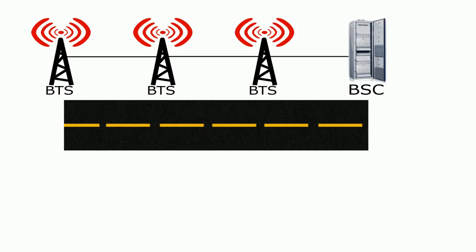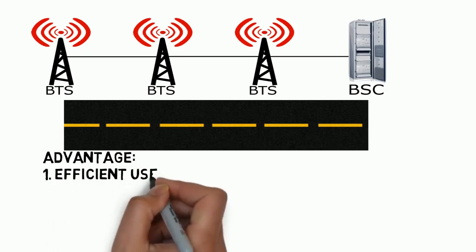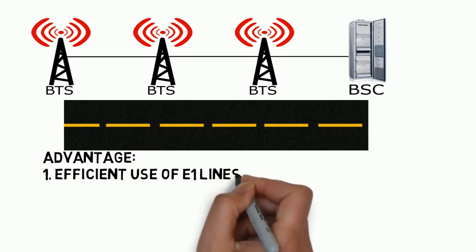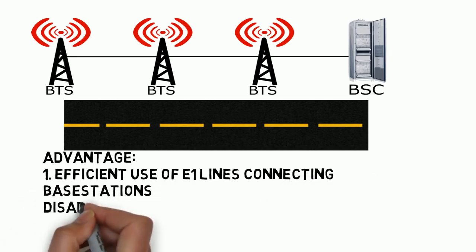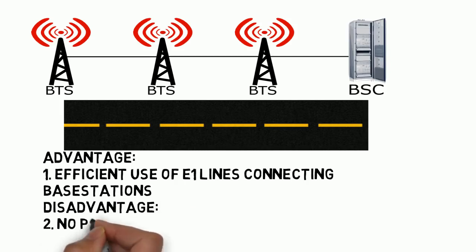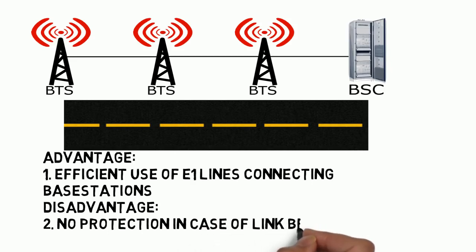On the highway, the BTSs can be connected in serial to one another and then to the BSC. These connections between the BSC and the BTS are made on E1 lines, or in the case of American standards, on T1 lines. Similarly, the connection between BTS and BTS is also on E1 lines. The advantage of this configuration is that it uses the channels in those E1s very efficiently, reducing the number of required E1s.